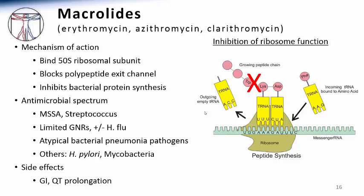Other organisms inhibited by macrolides include Helicobacter pylori and various mycobacterial species. In terms of side effects, macrolides can frequently cause GI disturbances such as nausea, especially erythromycin. Macrolide use can also result in cardiac repolarization delays and prolongation of the QT interval on the EKG, so care must be taken if co-administering with other agents that share this property.